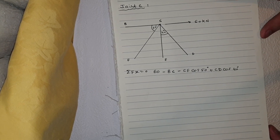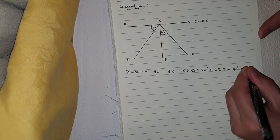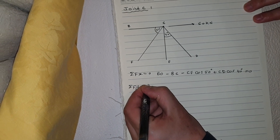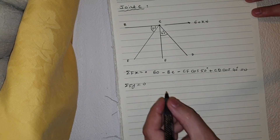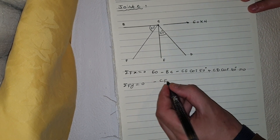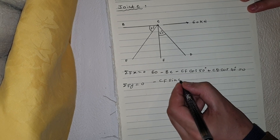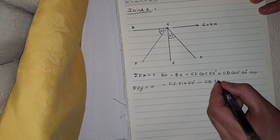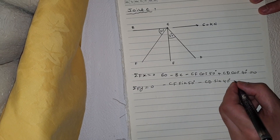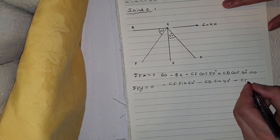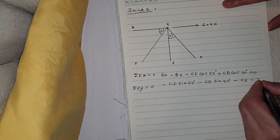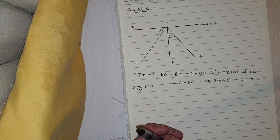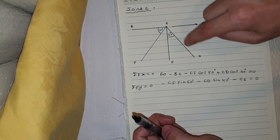Plus CD cosine of 40 degrees. Do you have any other force acting in that horizontal direction? No, therefore it is equal to zero. Next step, I'll take summation of Fy, that will be equal to zero: I have minus CF sine of 50 degrees, minus CD sine of 40 degrees, minus CE, and that will be equal to zero. At joint C we have three unknowns: CF, CE, and CD.